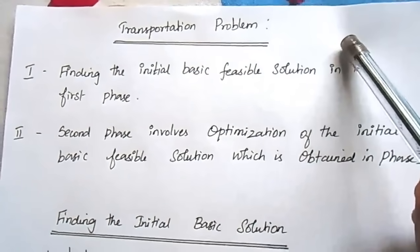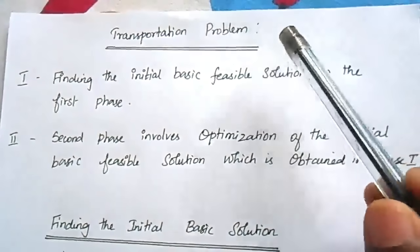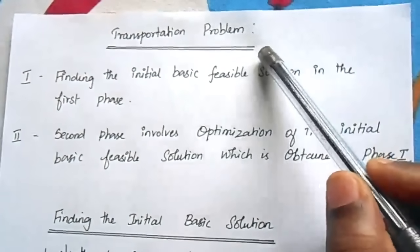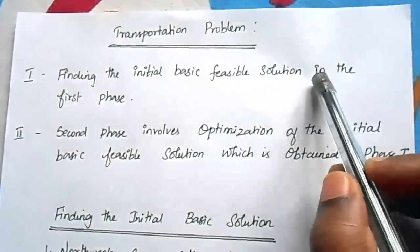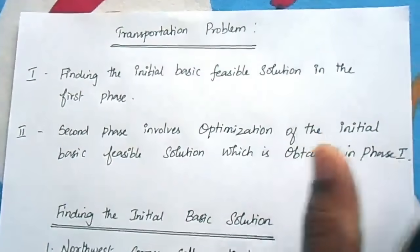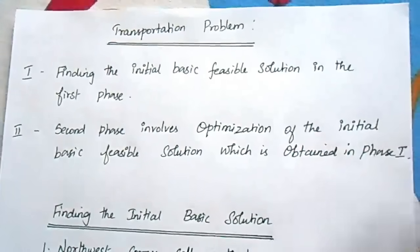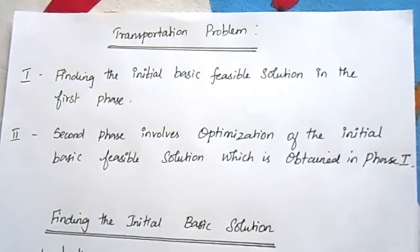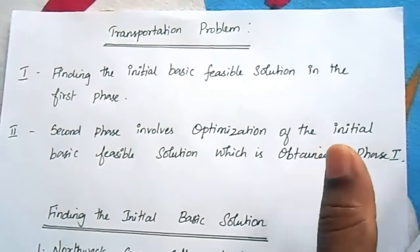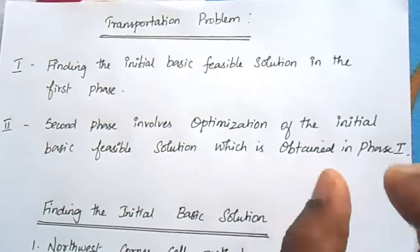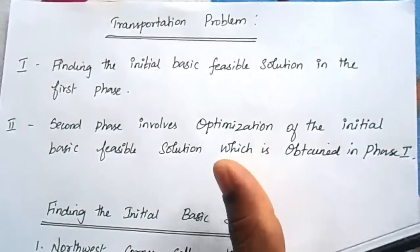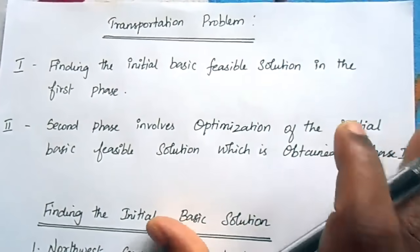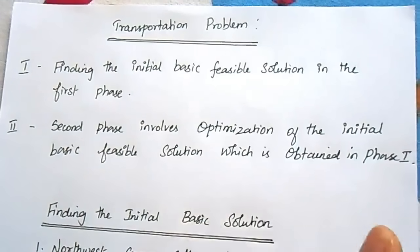In this video I am going to explain the transportation problem. Transportation problem is a special kind of linear programming problem in which goods are transported from one set of sources to one set of destinations, subject to the supply and demand of the sources and destinations, such that the total cost of transportation is minimized.